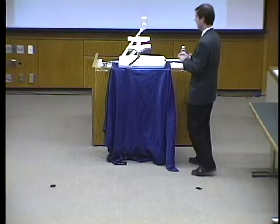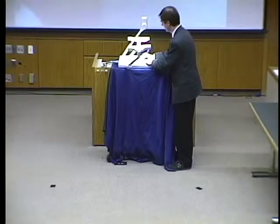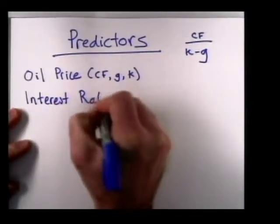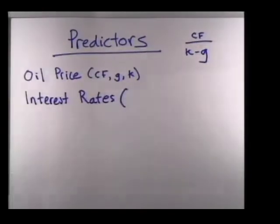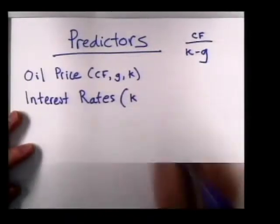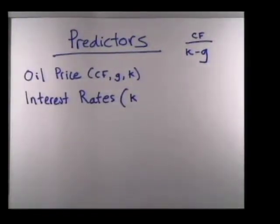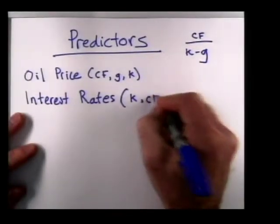A student suggested interest rates as another predictive variable. Interest rates certainly affect K — the required rate of return — but also cash flows and growth, since in a high interest rate environment, economic activity slows down. Almost all these variables affect all three components of the valuation model, but in differing order of importance. The order is roughly K first, then CF, then G.